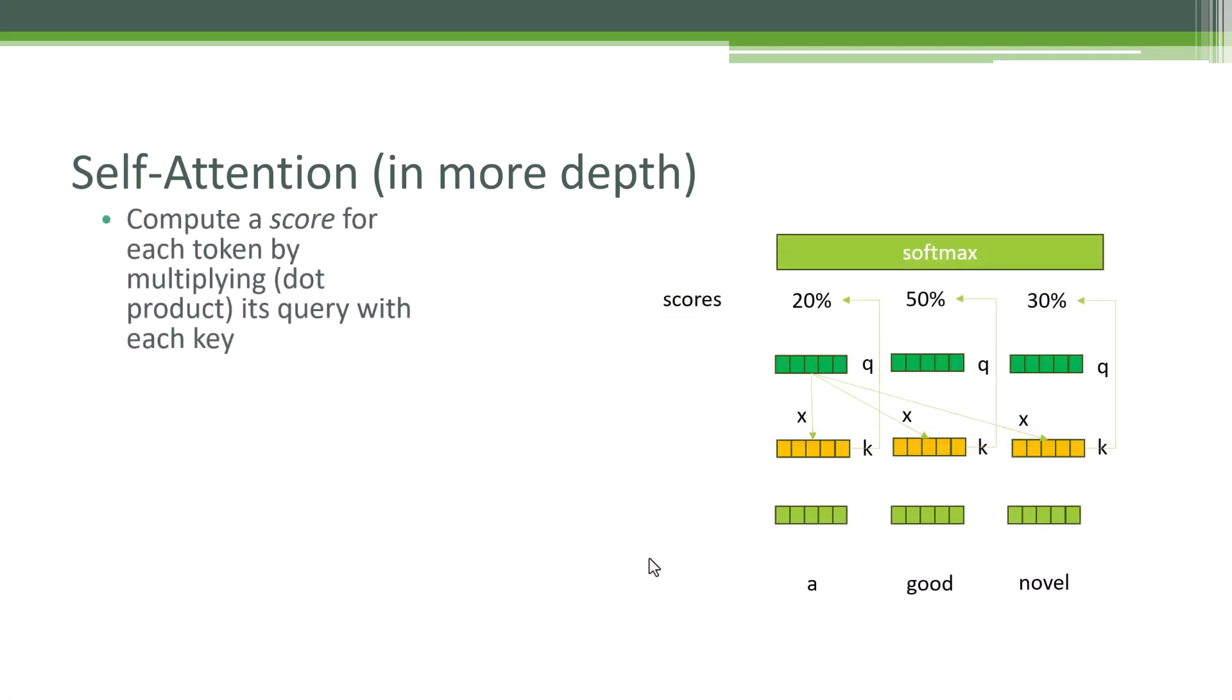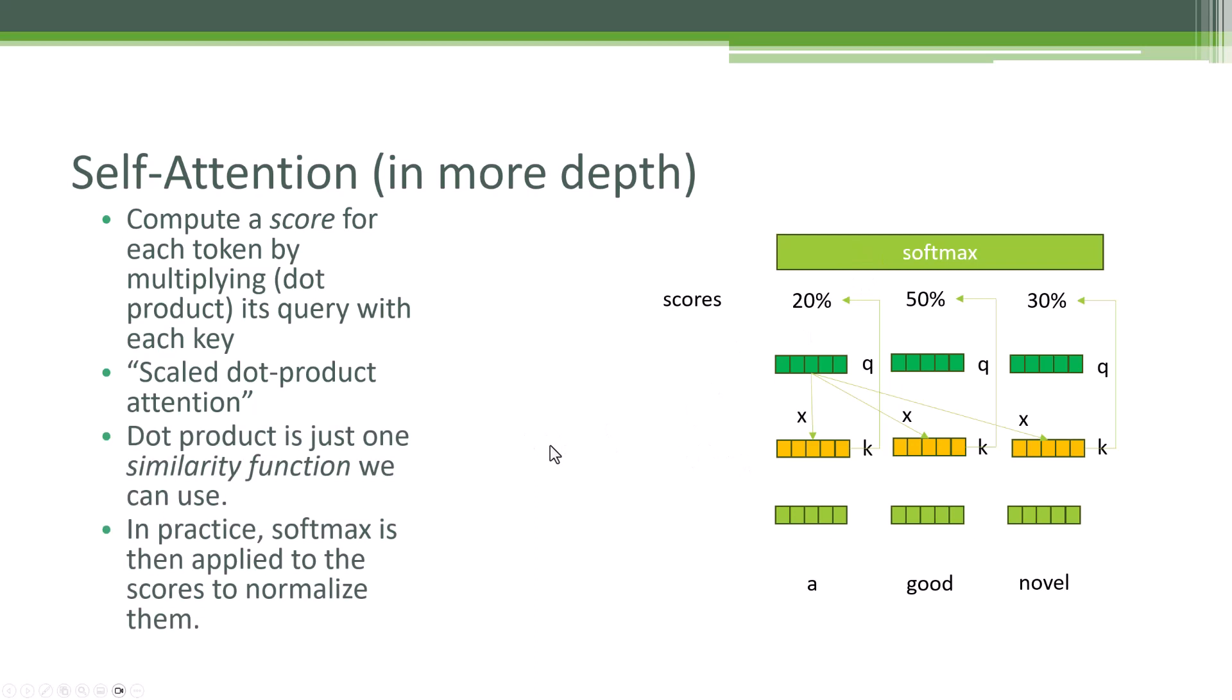The next step is we compute a score for each token. And we do this by multiplying its query with each key. So we're going to take the query vector that we got by multiplying it against our learned query matrix, multiply it against the key for each token. And then that produces a score for every individual token that might be associated with this one. We call this scaled dot product attention specifically because there are other ways of doing it. But since we're doing multiplication here, we do that mathematically through what we call a dot product. Scaled because we're doing a softmax at the end. So that basically normalizes everything.